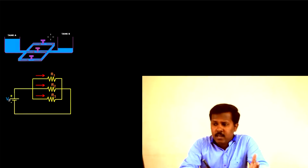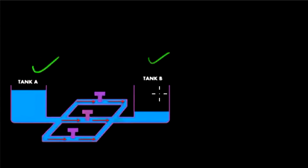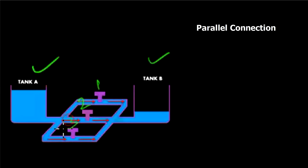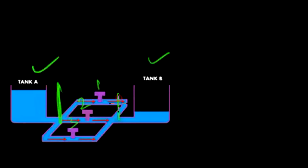Now look at this picture. Here you can see the same Tank A and Tank B, but instead of one pipe there are now three pipes. In each pipe there is a gate valve — gate valve 1, 2, and 3. These kinds of connections are known as parallel connections because the gate valves are connected in parallel, not one after another. You can see that all the pipes are connected to the same ends.